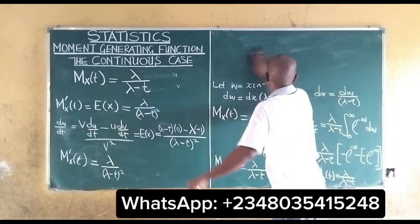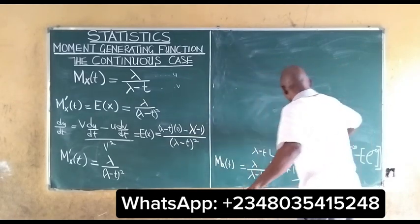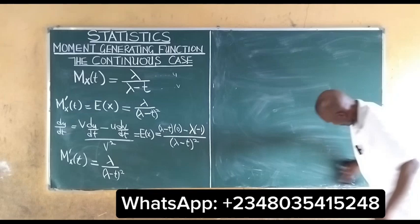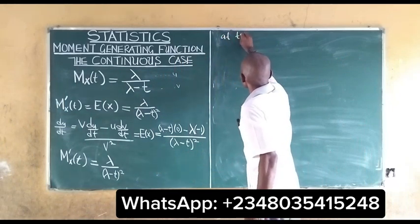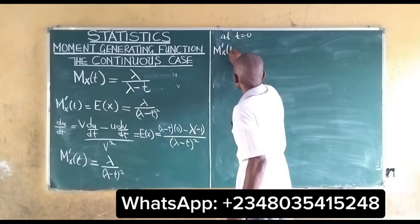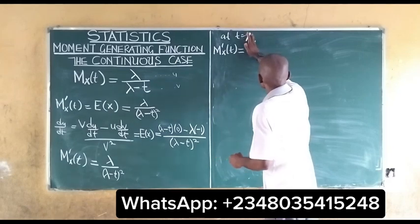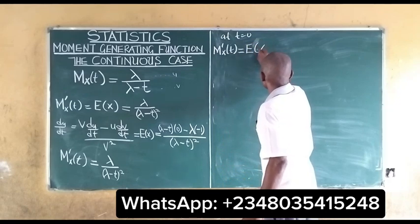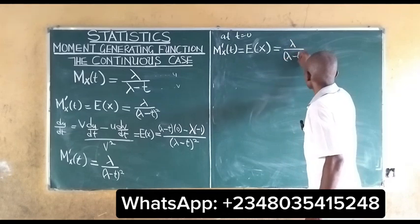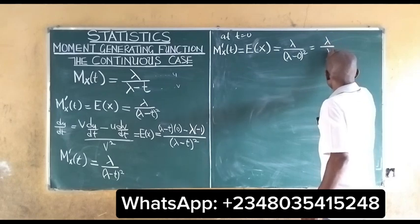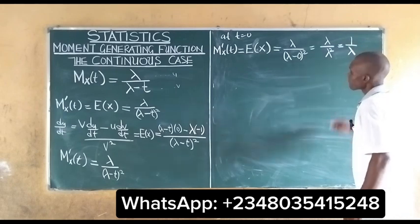At t equal to 0, our first moment — which is also equal to the expected value of X — becomes λ over (λ − 0) squared, which is λ over λ squared. This cancels to give us 1 over λ. So E[X] equals 1 over λ.